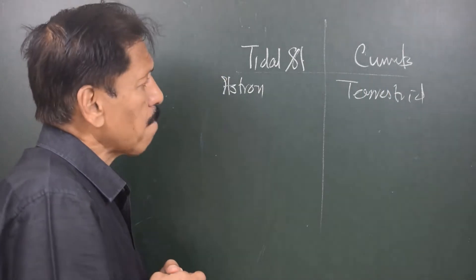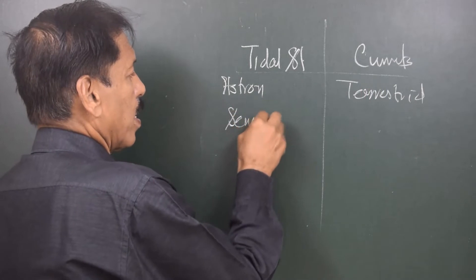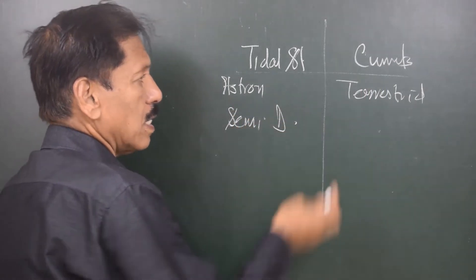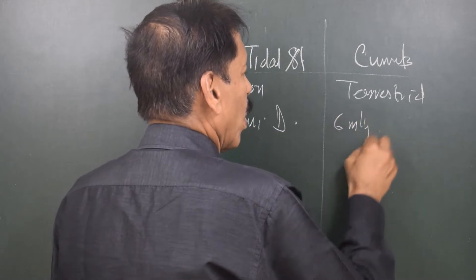Another difference is that tidal streams are semi-diurnal and diurnal, whereas currents are usually six-monthly or permanent.